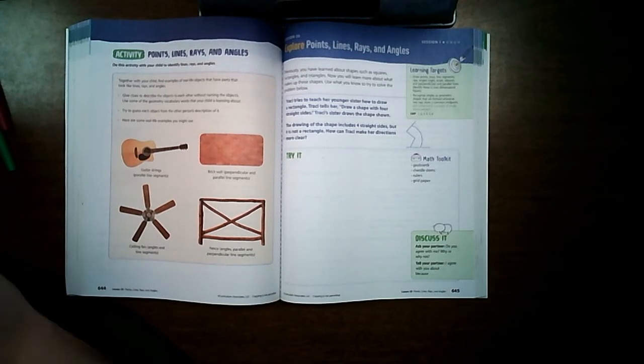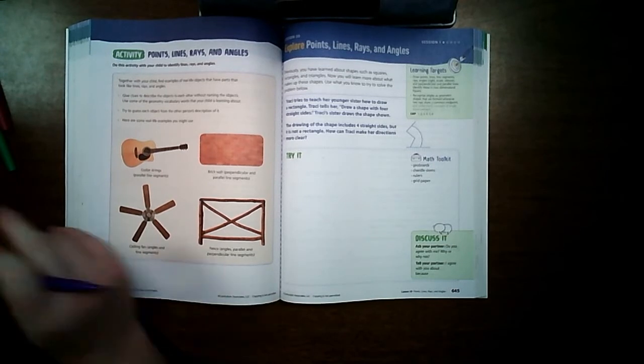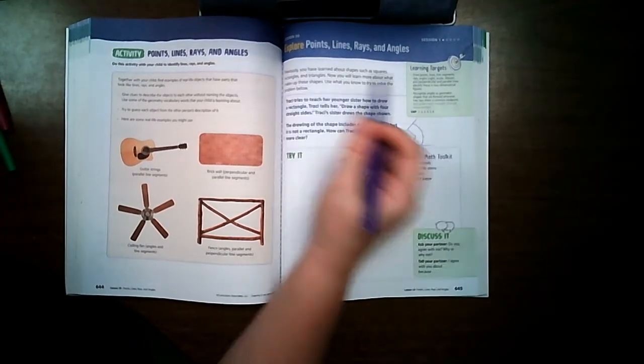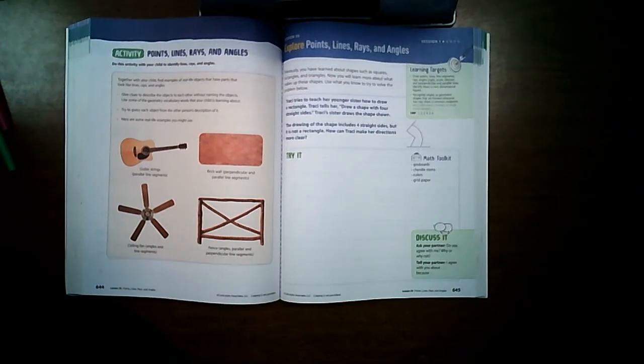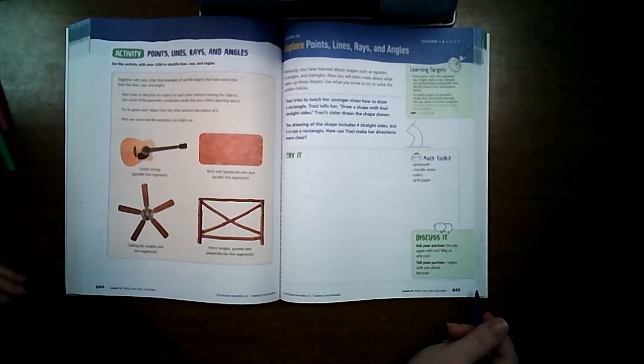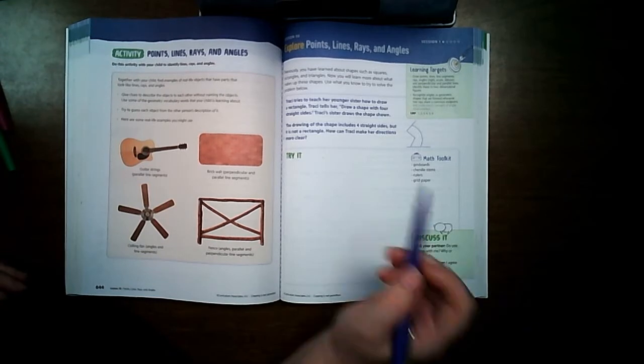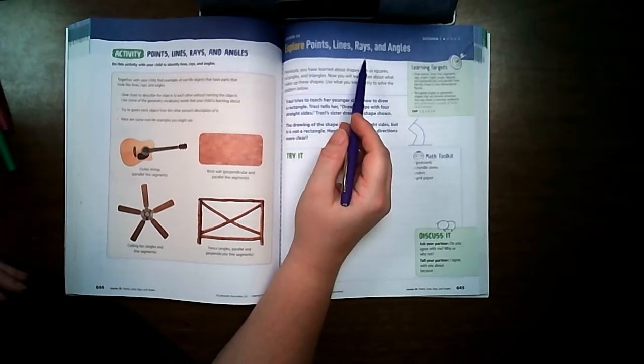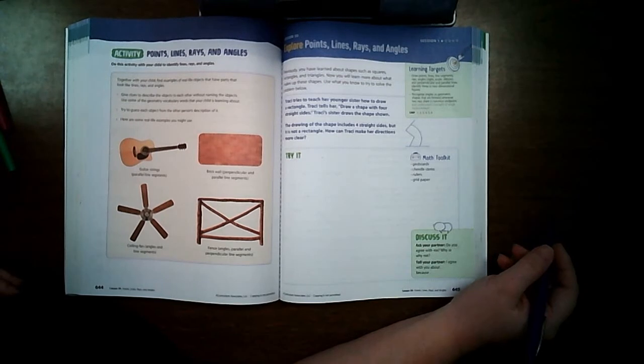Hi students, today we are starting our unit on geometry. To begin, we are going to be on lesson 30, session 1, page 645 in your volume 2 math book. We're going to be exploring points, lines, rays, and angles, so let's get started.